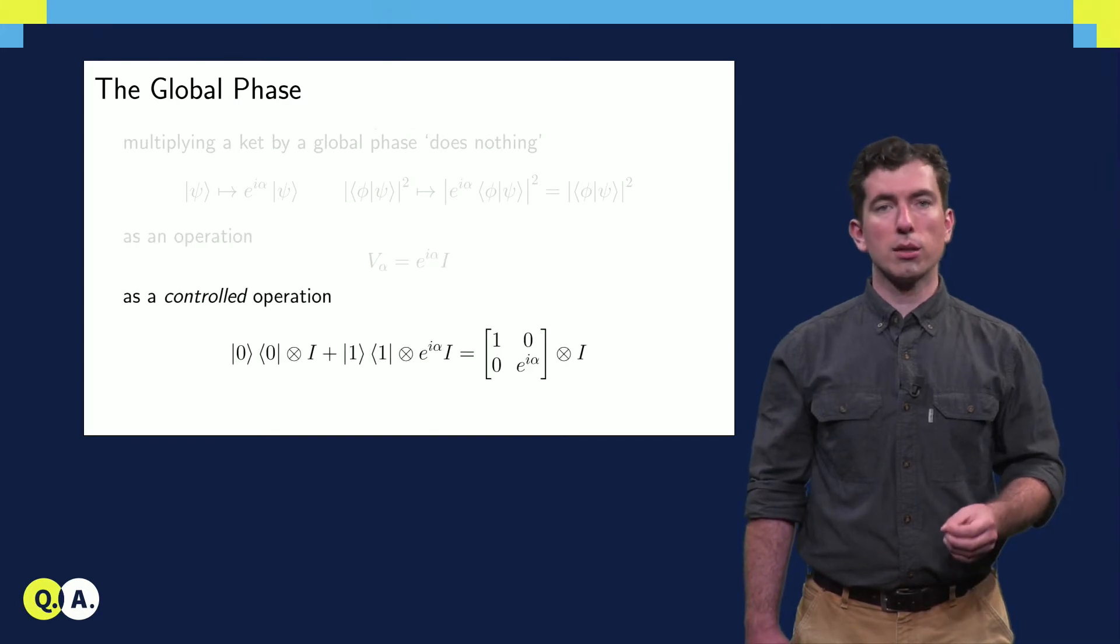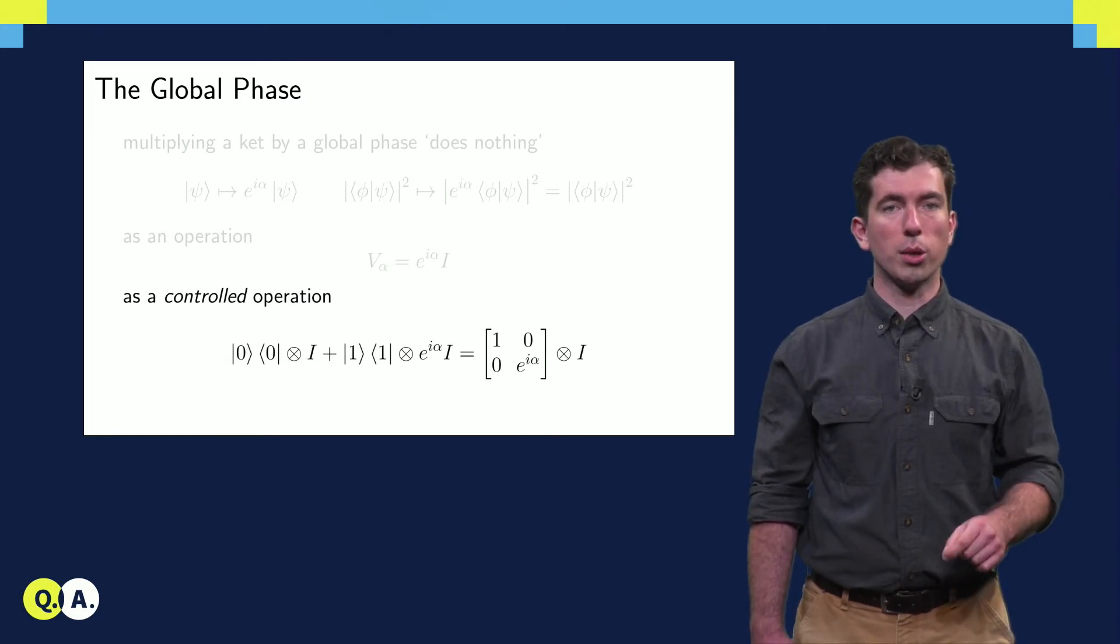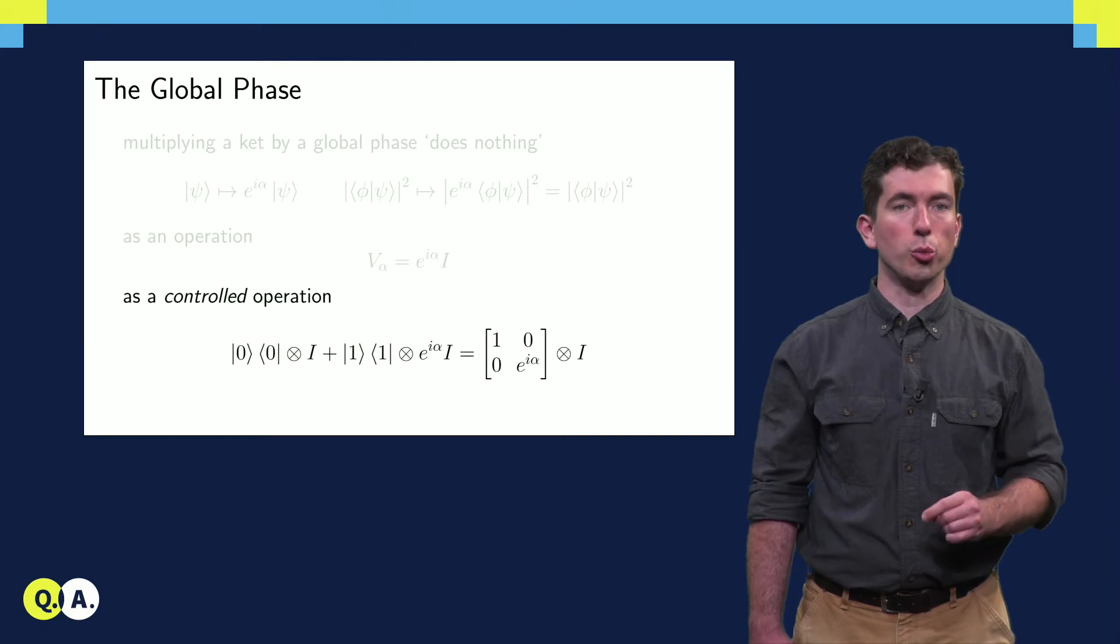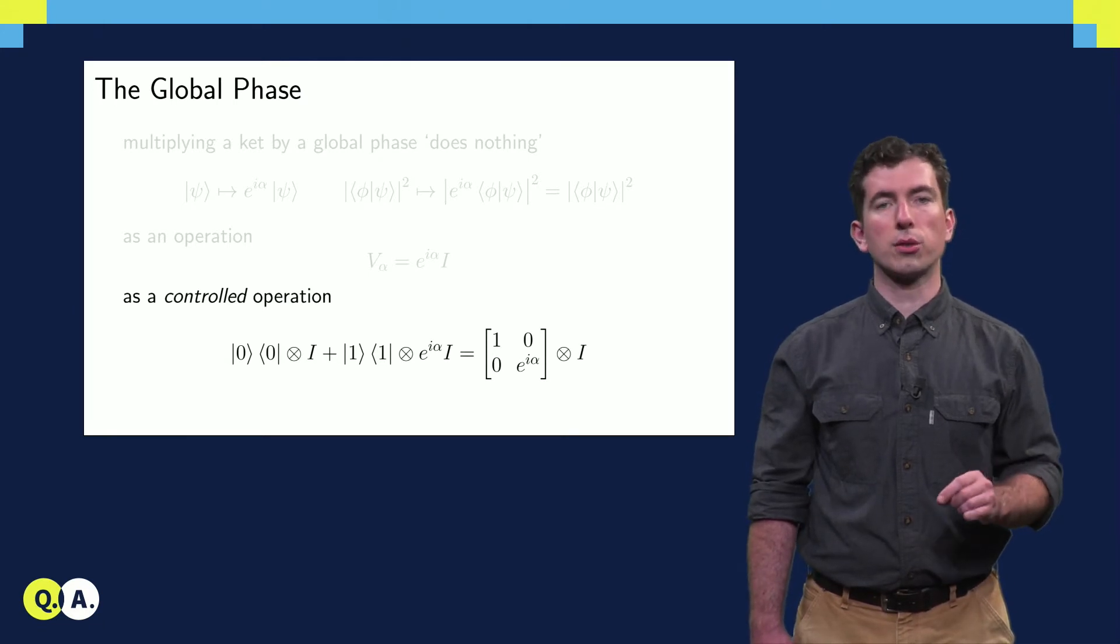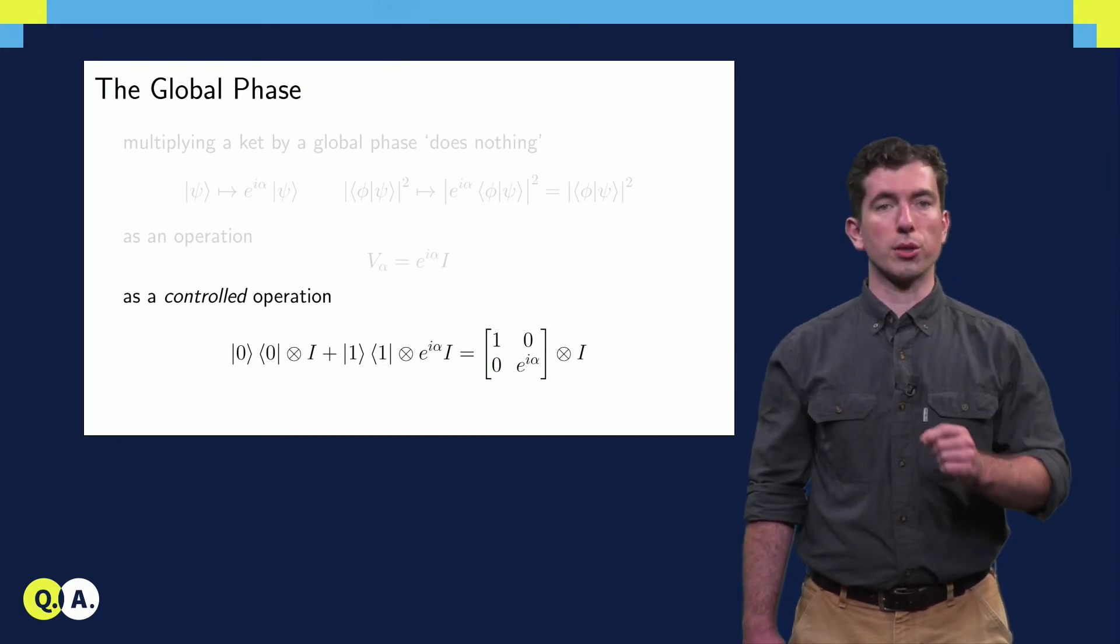However, something interesting does happen when we define a controlled V alpha operation. A phase is accumulated on the one component of the state of the control qubit. This is a stark contrast to the normal way of thinking about controlled operations, in which something happens to the target qubit depending on the state of the control.